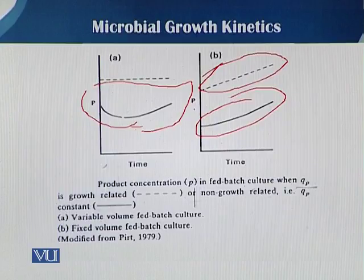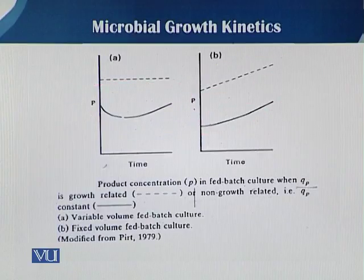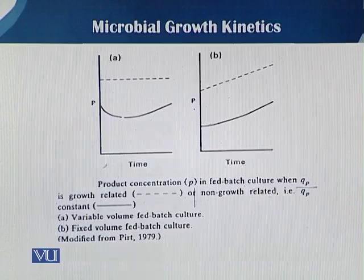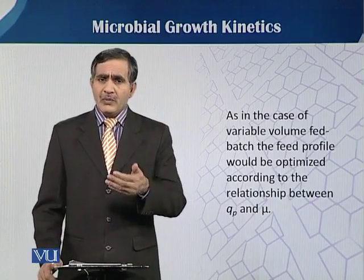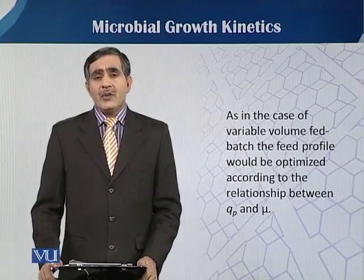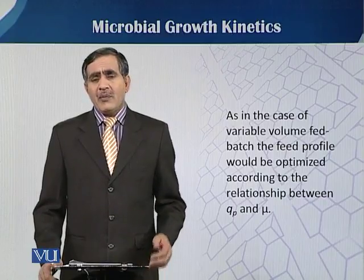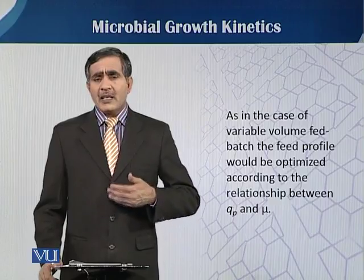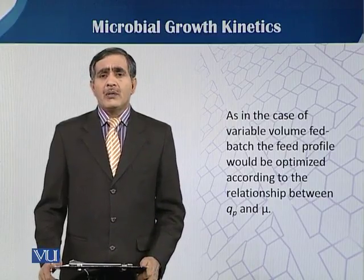In both cases — whether growth related or not growth related — in fixed volume, we have a linear relationship between the product formation or rate of product formation during the fermentation process. These two diagrams show the relationship in fixed volume versus variable volume. When toxic secretions become very high, they have a very negative effect on mu (the specific growth rate), and in fixed volume this creates a difficult situation to maintain mu equal to the dilution rate.